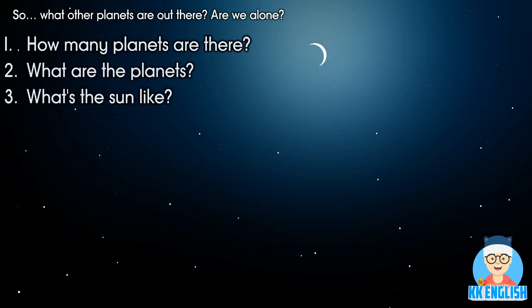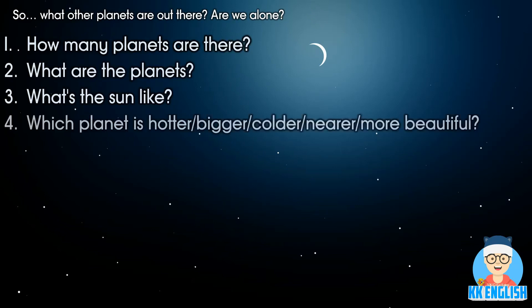Number three: What is the sun like in this system? There should be a star — what does it look like? Number four: Which planet is hotter? Which planet is bigger? Which planet is colder? Which planet is nearer? And which planet is more beautiful?